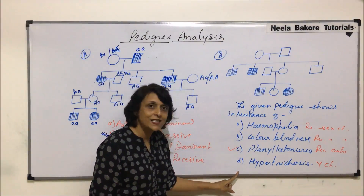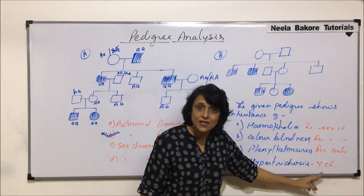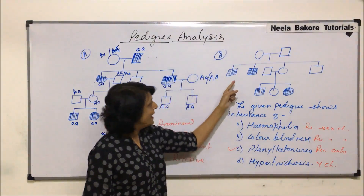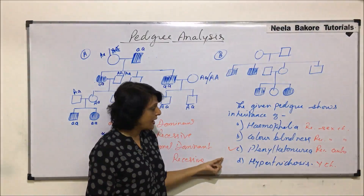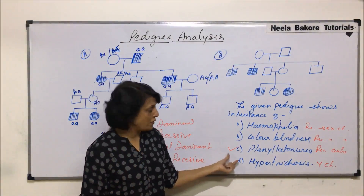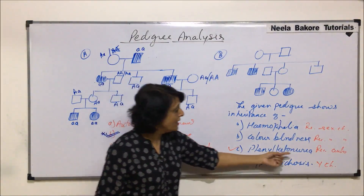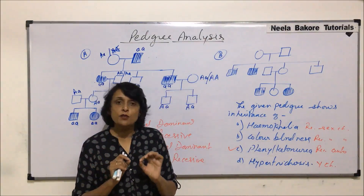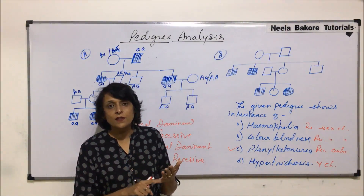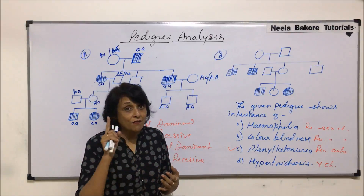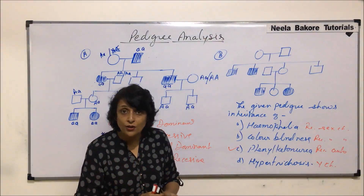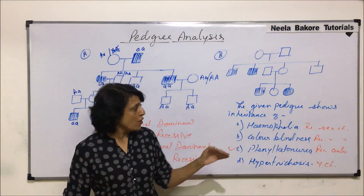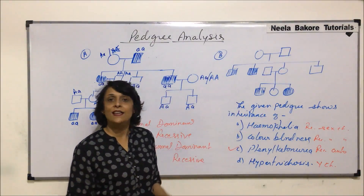So this pedigree represents autosomal recessive inheritance, and the disease is phenylketonuria. To summarize the key clues for pedigree interpretation: if it is dominant, the gene will express in all generations; if it is X-linked and the father is affected, the trait passes only to daughters; if affected individuals are equally male and female, it is typically an autosomal disease.